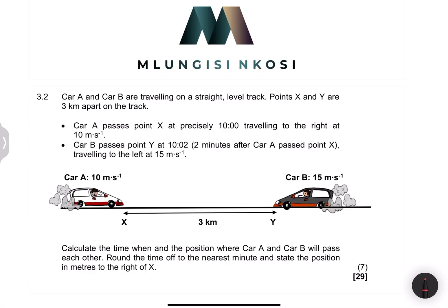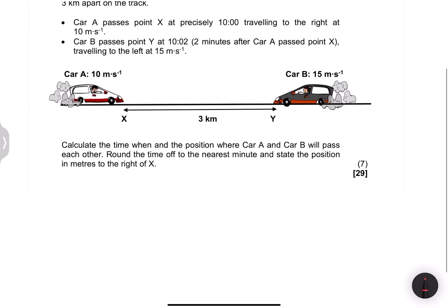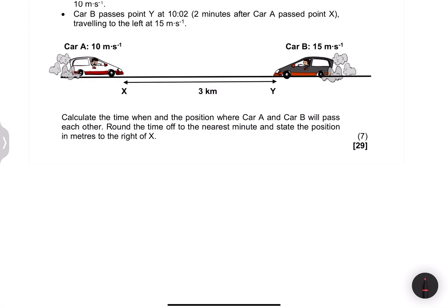We're given two cars — Car A and Car B — travelling on a straight level track. Points X and Y are three kilometres apart on the track. Car A passes point X at precisely 10:00, travelling to the right at 10 metres per second. Car B passes point Y at 10:02 — that is two minutes after Car A passed point X — travelling to the left at 15 metres per second. We need to calculate the time and position where Car A and Car B pass each other, rounding to the nearest minute and stating the position in metres to the right of X.